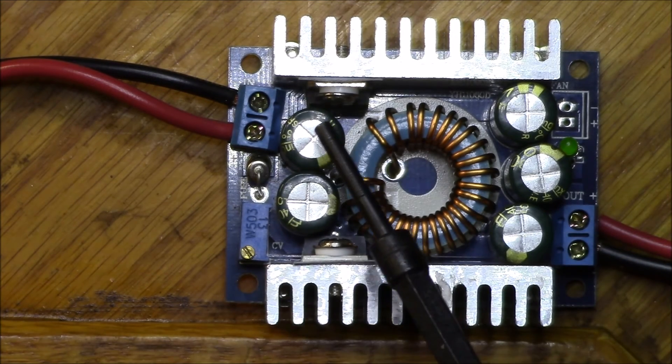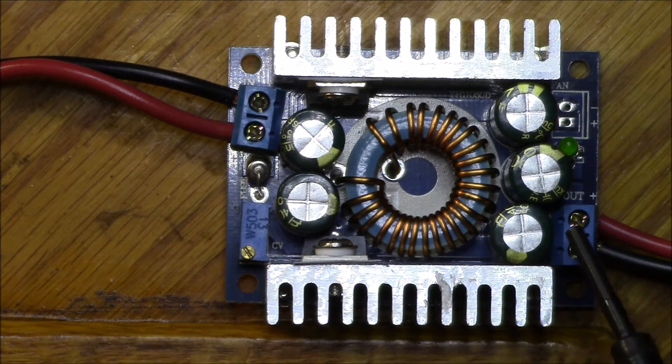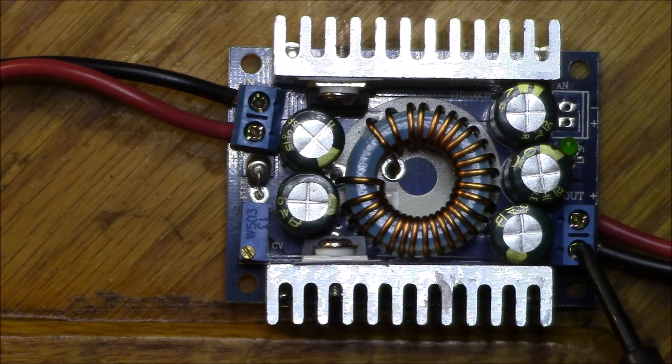The DC input voltage range is 5 to 40 volts. The DC output voltage range is 1.2 to 36 volts.